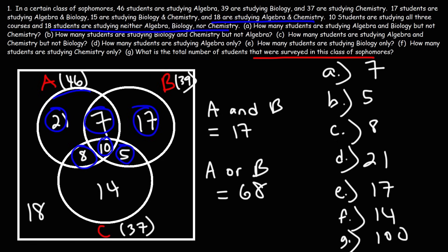Now let's find students taking biology or chemistry — all numbers in circle B or circle C. That's 7 + 17 + 10 + 5 = 39, plus 8 + 14 = 61. So 61 students are taking biology or chemistry.